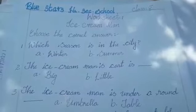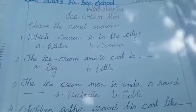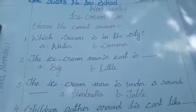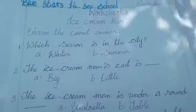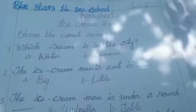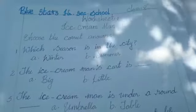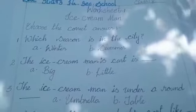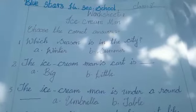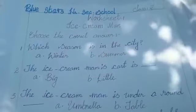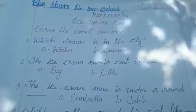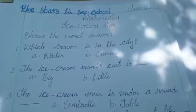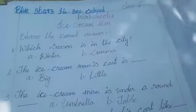Let's see what parts are given for you. There are two parts: the first part is 'Choose the Correct Answer' and the second part is 'Rhyming Words.' In total you have to answer 20 questions. In the first part, I have asked questions like: which season is in the city, who is the writer of this poem, how did the poet compare the cart, and what did the ice cream man bring in his cart. I hope you have answered in the correct manner.